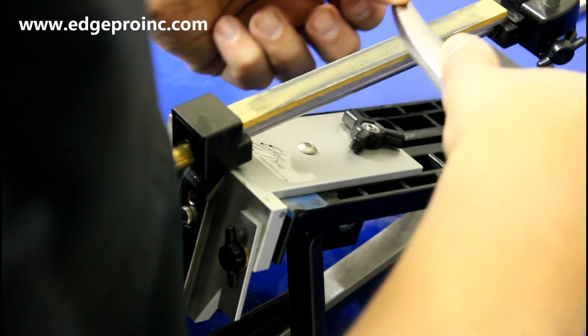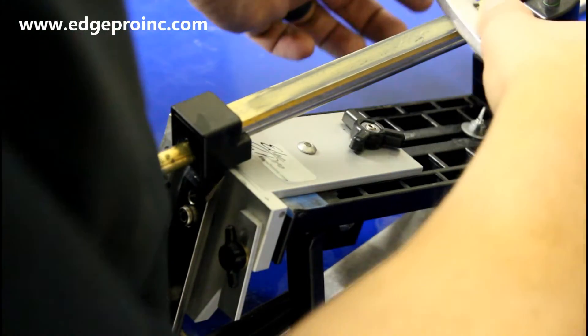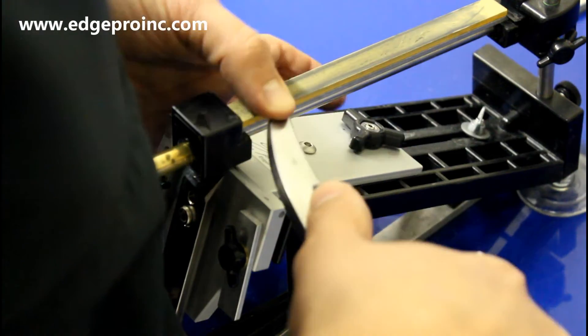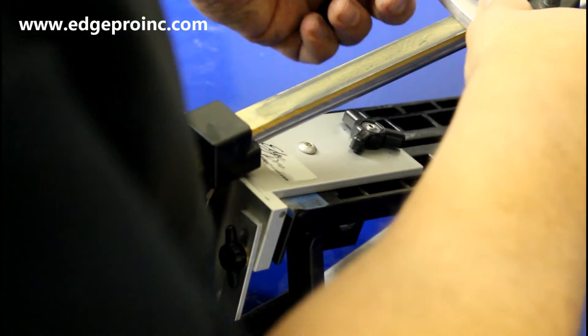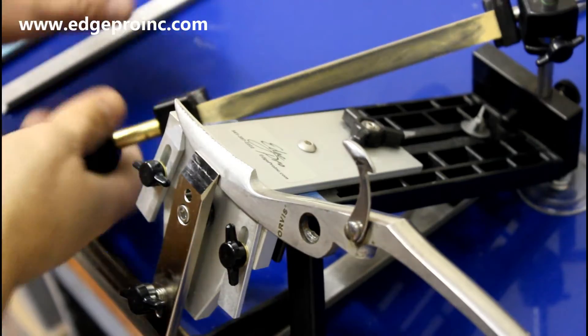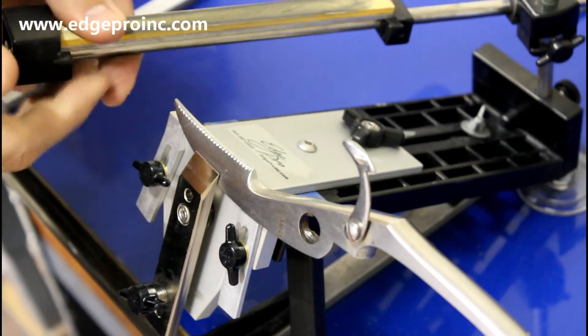I'm just going to draw the blade towards me to deburr, holding the inside edge flat against the stone. All right, moving on to the 2000 grit polish tape.